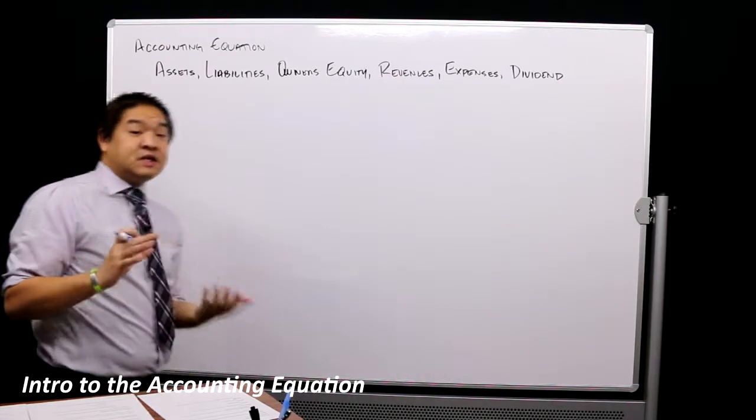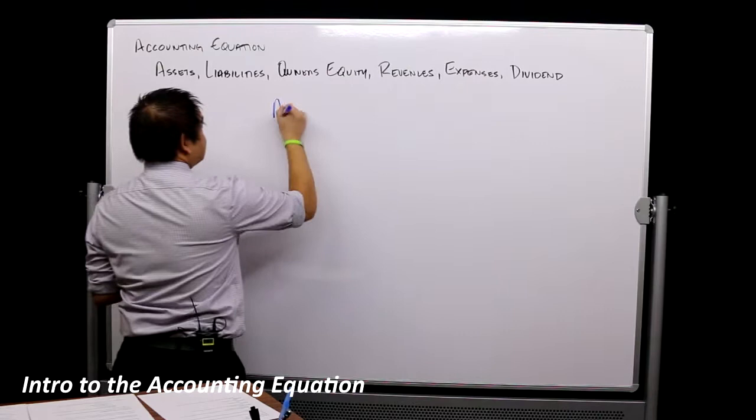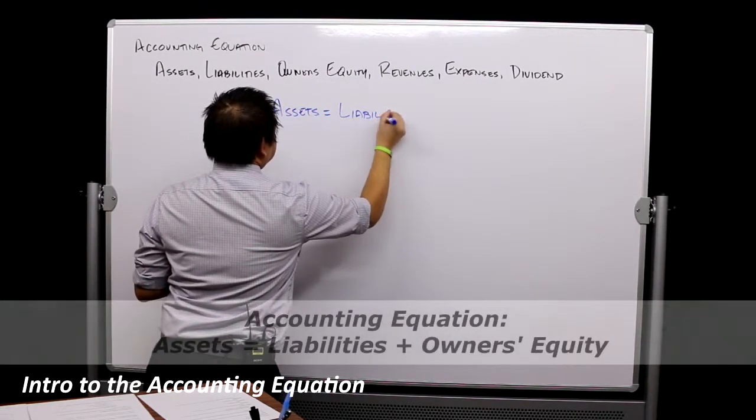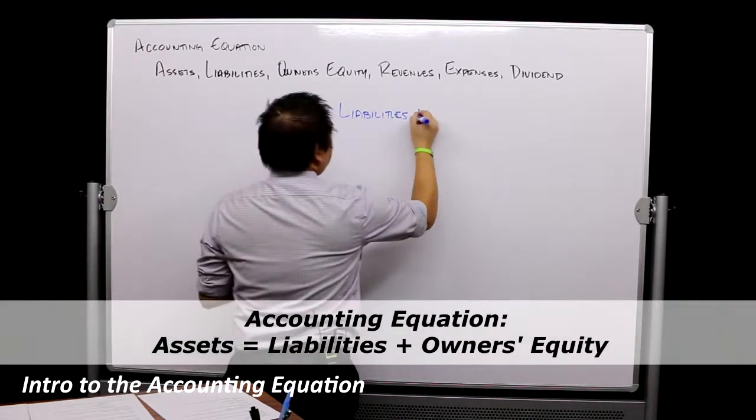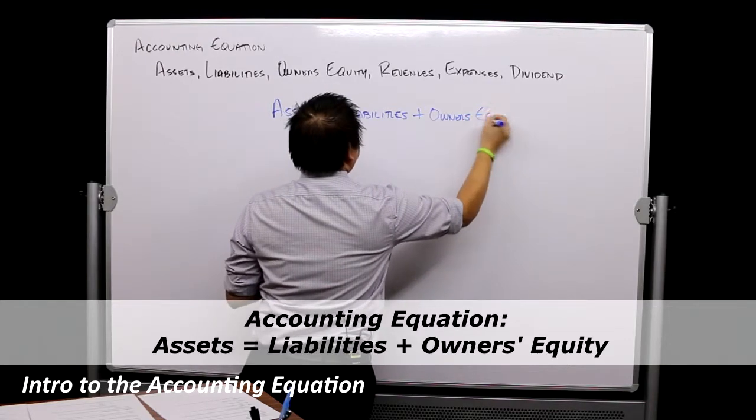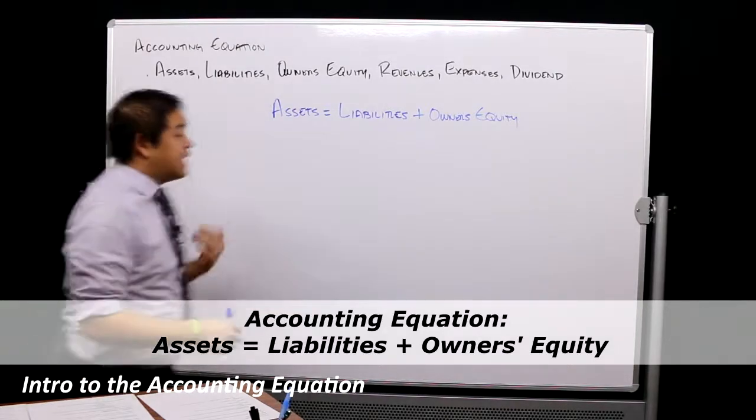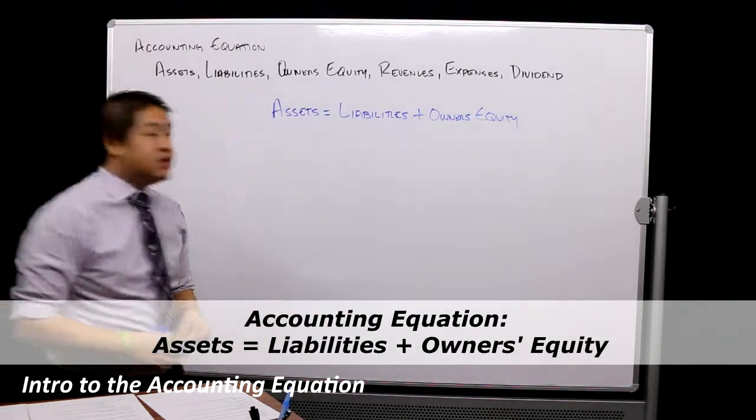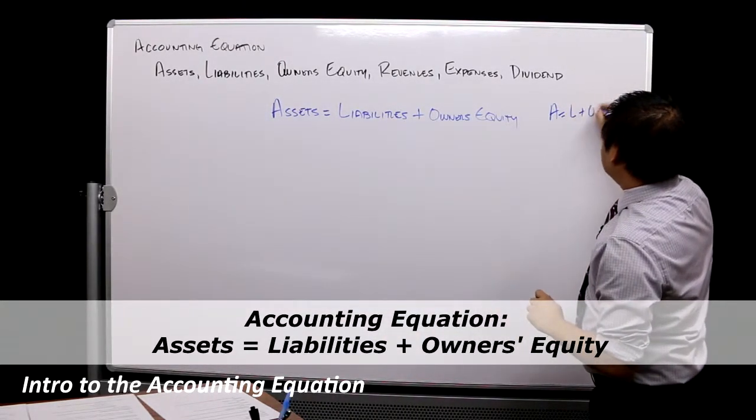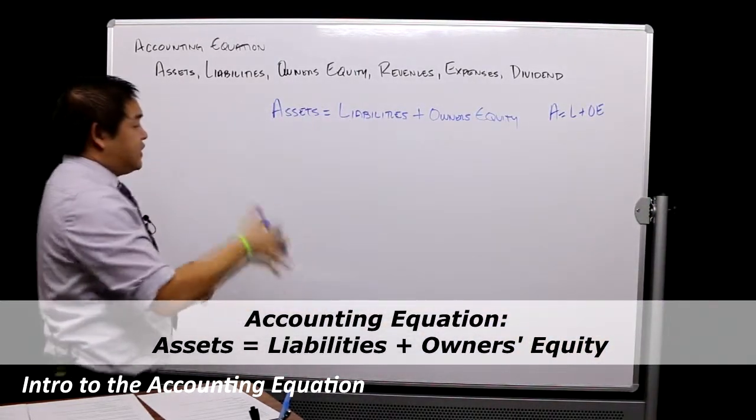The accounting equation is very simple, and many textbooks show it this way: Assets equals Liabilities plus Owner's Equity. I typically use abbreviations, so you're going to see me go A = L + OE—assets equals liabilities plus owner's equity.